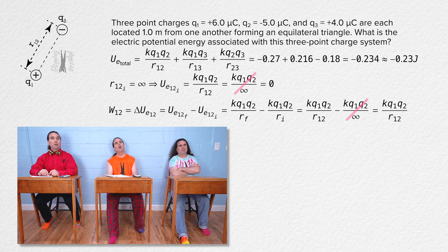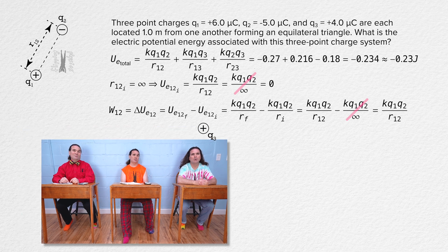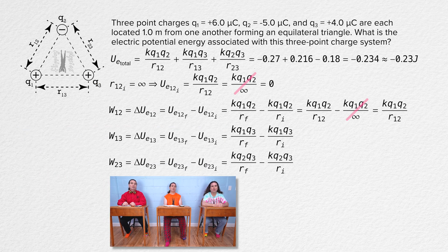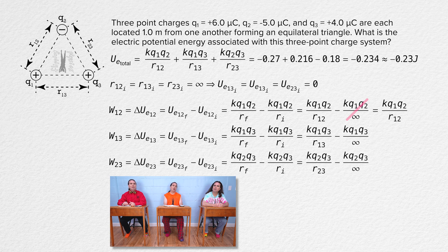We know energy is a scalar so we can just add electric potential energies together. We figure out the work required by an external force to move charge three at a constant velocity from an infinite distance from both charge one and charge two to a distance r13 from charge one and a distance r23 from charge two. At the initial position, charge three is at infinite distance from both charge one and charge two, so the initial electric potential energies of both two-charge systems — the charge one and charge three system, and the charge two and charge three system — are equal to zero.